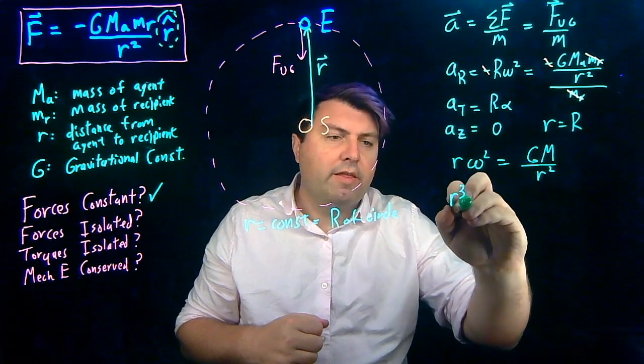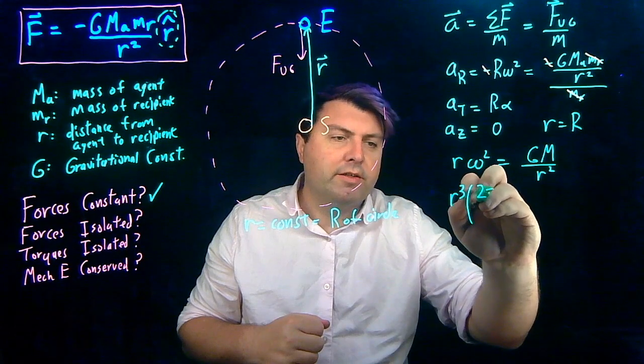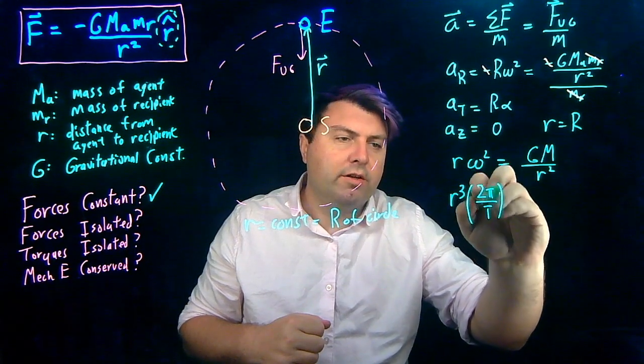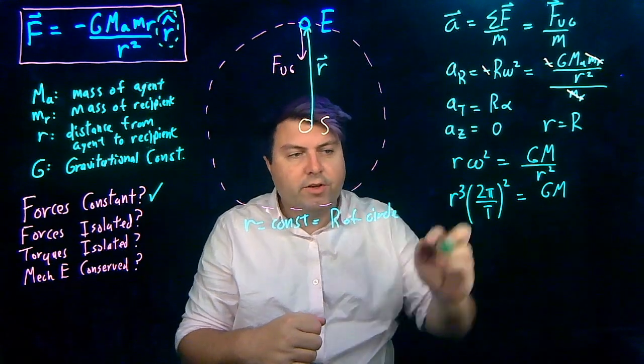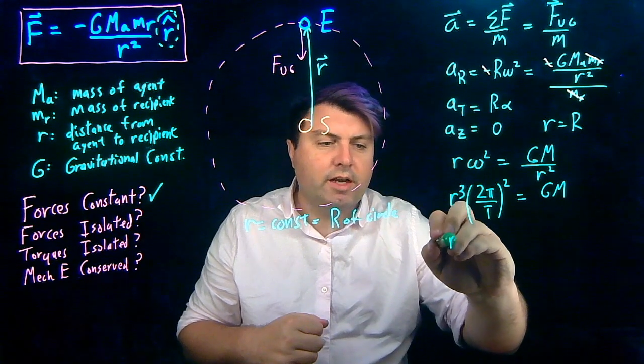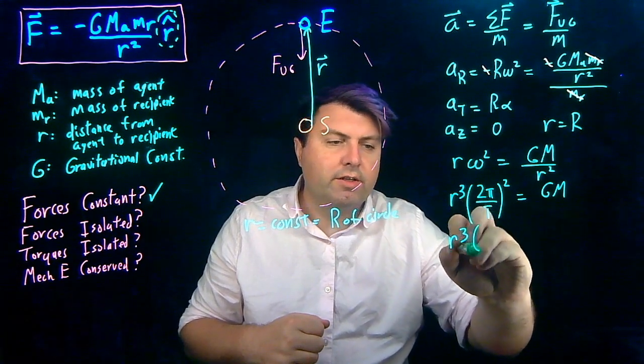And then instead of omega, I can write this as 2 pi over the period squared is equal to G m. So I can bring this t over to this side, and I have r to the third times...